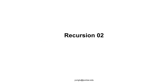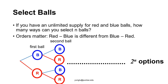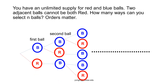This is the second lecture on recursion. Let's review what we had in the first lecture. We want to count the number of ways of selecting N balls from red or blue balls. If there is no restriction, there are two to the power of N ways to select N balls. Next, we consider the situation with one restriction.